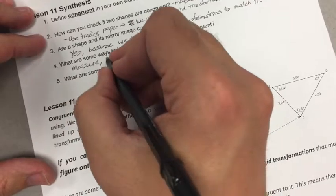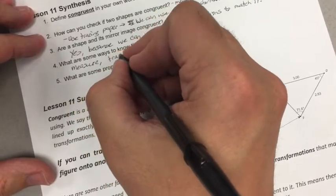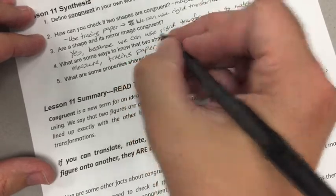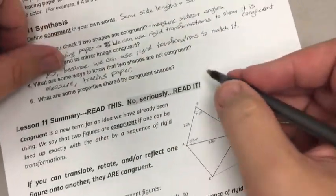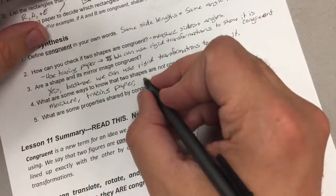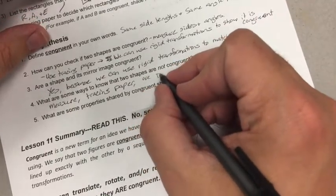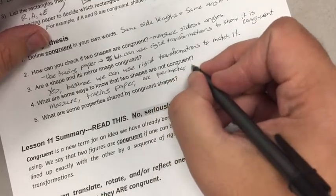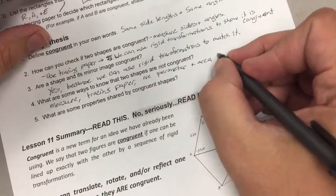We could use tracing paper to do rigid transformations. We could check: are perimeters and area the same?